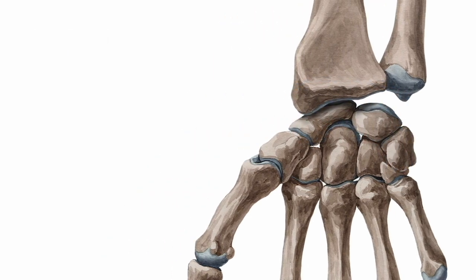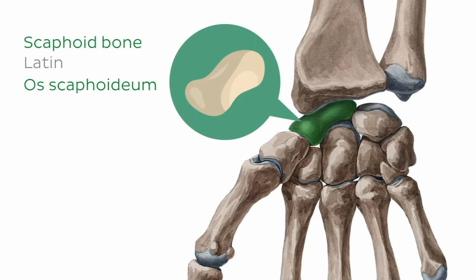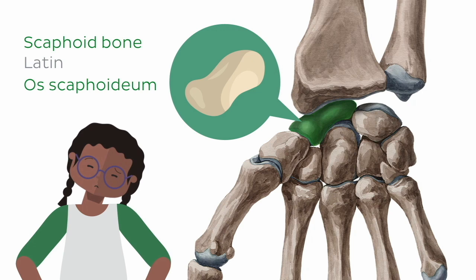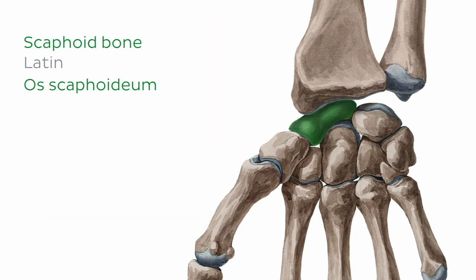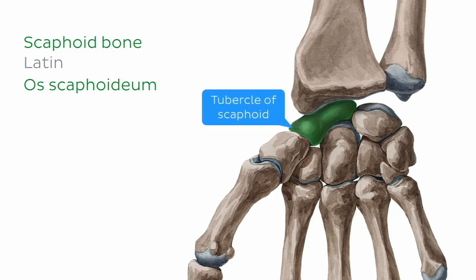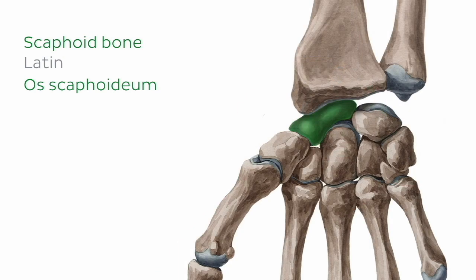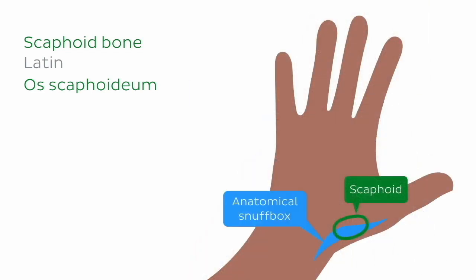The most lateral bone of the proximal row is the scaphoid bone. It is named after the Latin word for boat, which makes sense because if you squint your eyes and tilt your head, it sort of looks like a small boat. The scaphoid bone has just one prominent landmark — the tubercle of the scaphoid bone — which is found on the palmar side of the bone. This tubercle can be felt through palpation, so why don't you try it out for yourself? The scaphoid is the largest bone of the proximal row, and it lies beneath this region, which is known as the anatomical snuffbox.